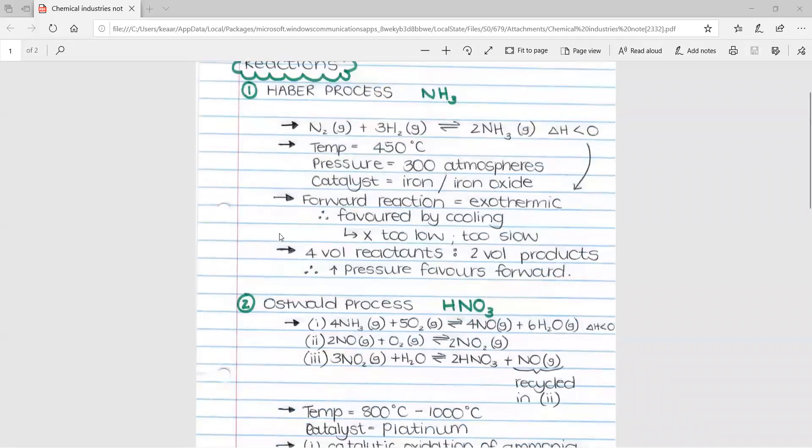We also can work out that we have three volumes of reactants to every two volumes of products. We get that from our balancing numbers. We have a one and a three to make our four for our reactants, and our two for our products. This shows us that we have a higher volume of reactants than products, which means an increase in pressure will favor the forward reaction. Because when we increase pressure volume decreases, the forward reaction would be pushed into forming two volumes of product.